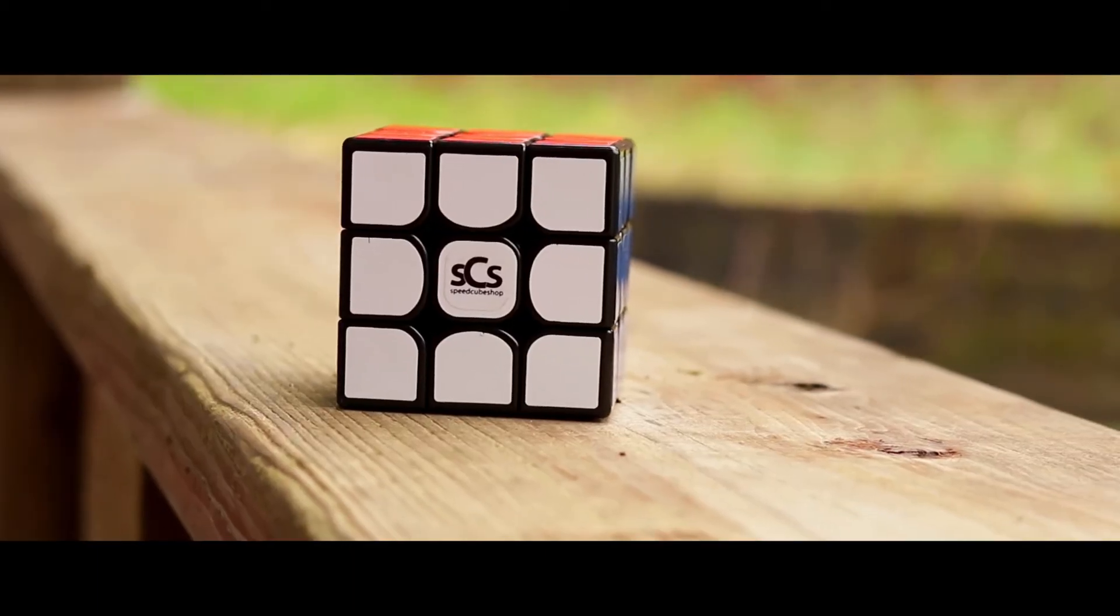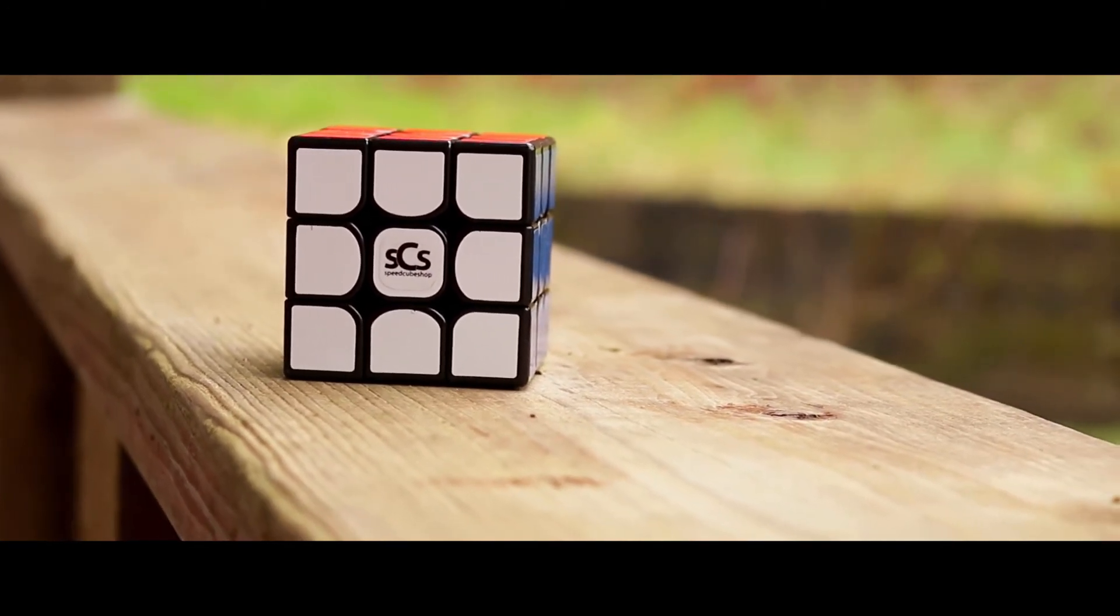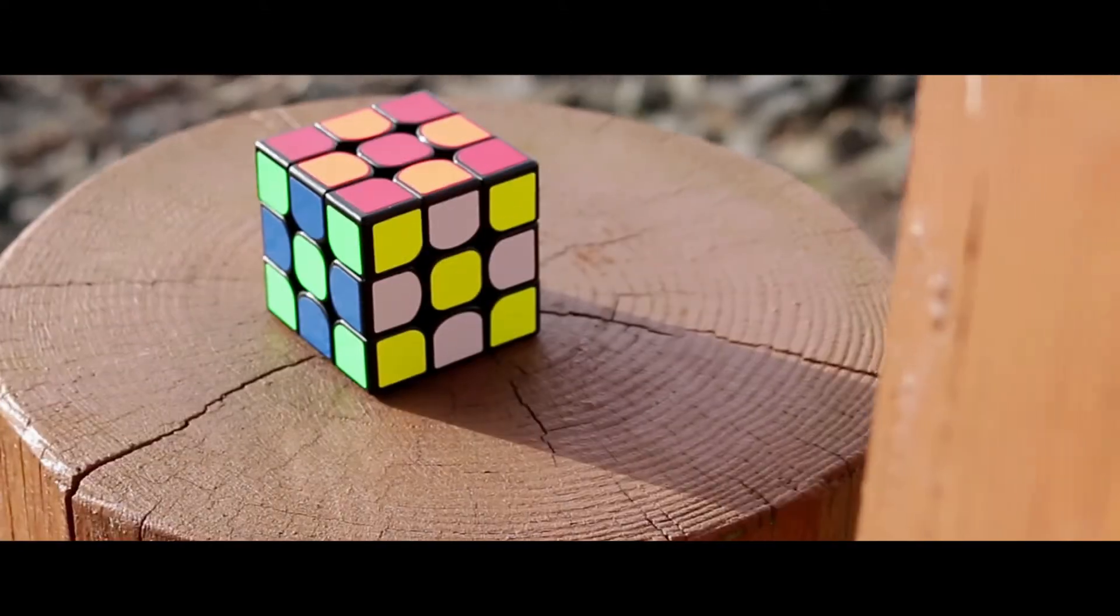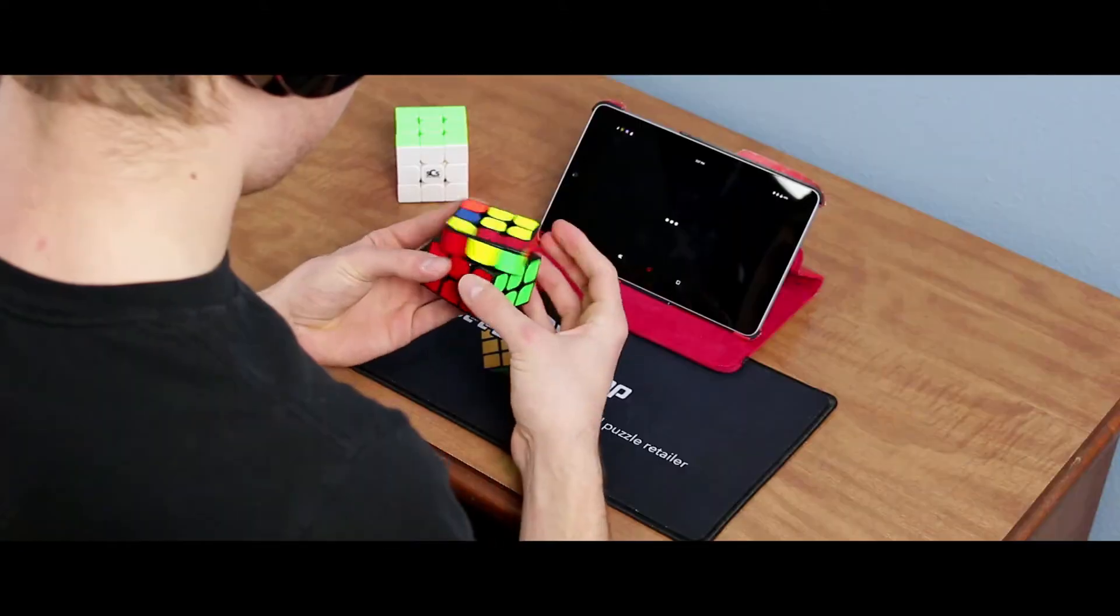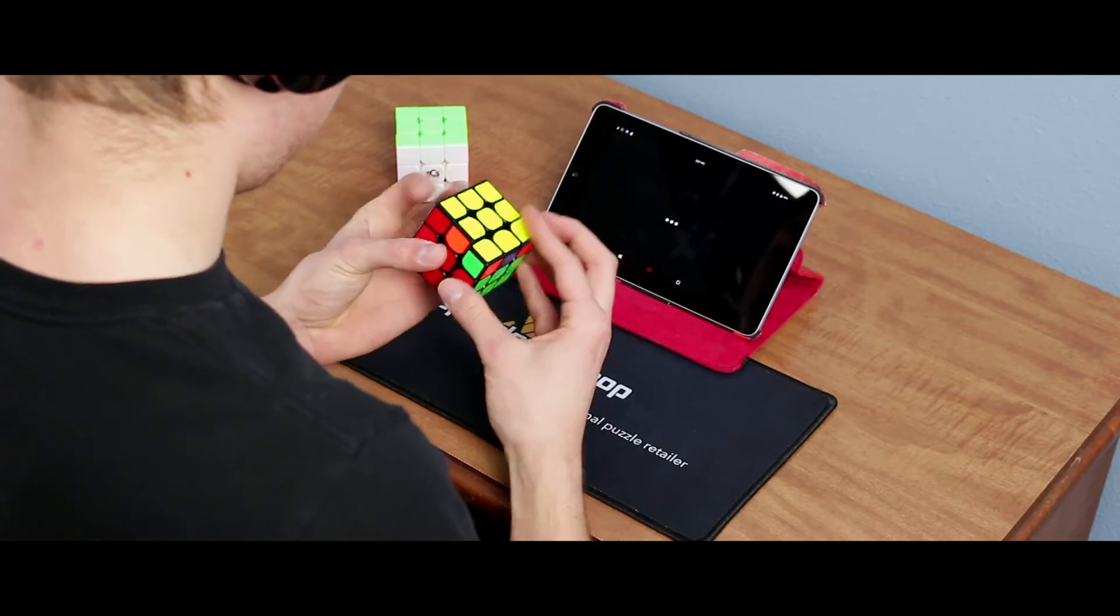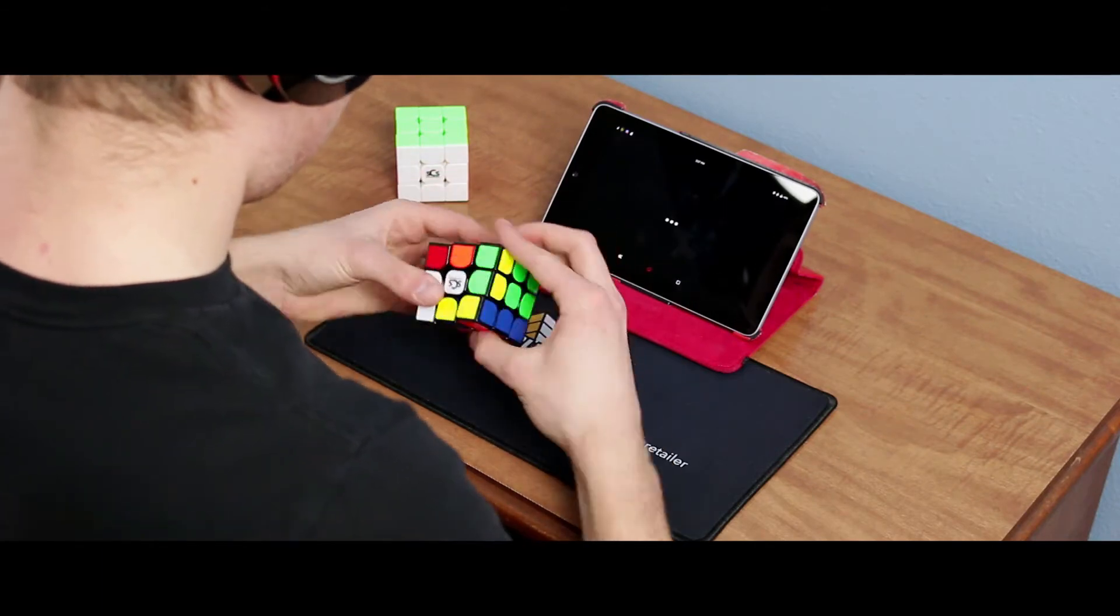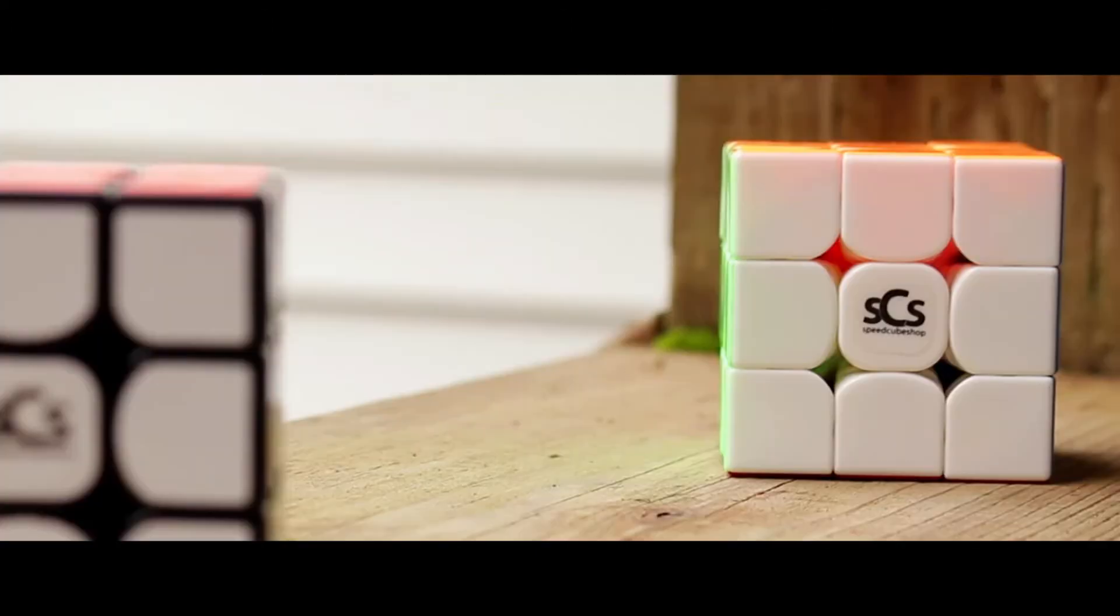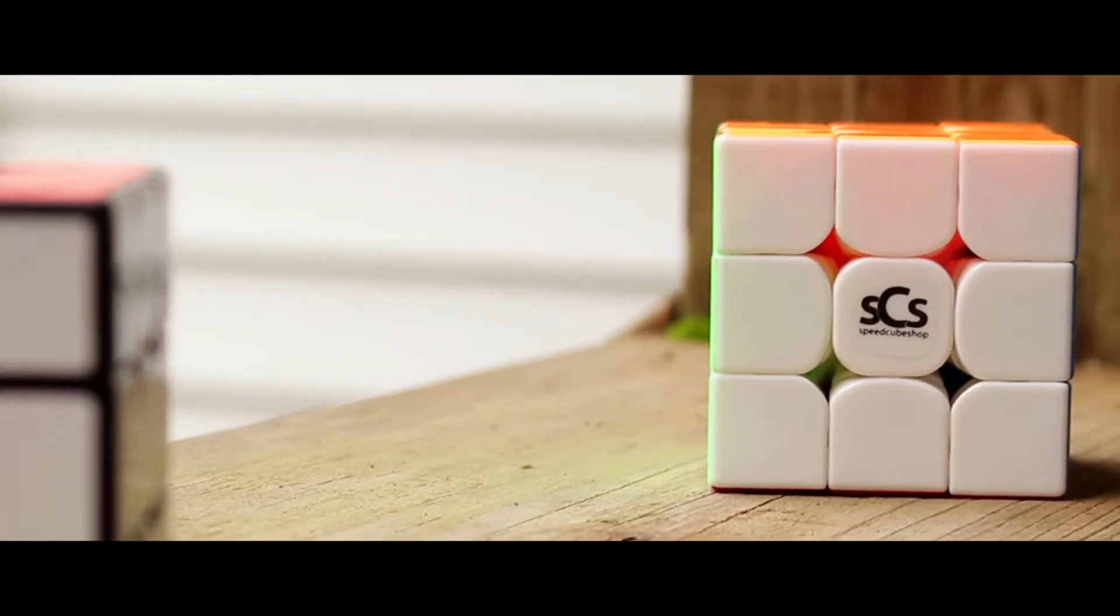I also want to mention that twice now, an edge has popped out on my black Yuexiao Pro-M while spamming TPS. I think that's happening because I'm aggressively turning on looser tensions, and I think the Yuexiao Pro-M is a little better for those with a light turning style, as a super aggressive turning style will create a pop every once in a while. This problem could be solved by tightening the cube, so that is something to keep in mind.